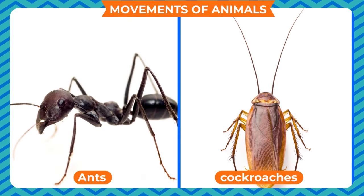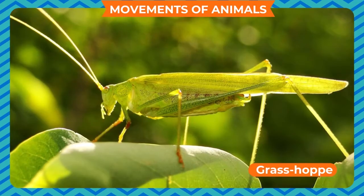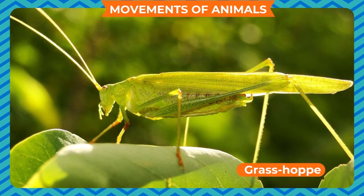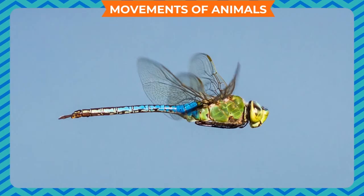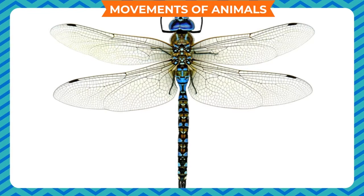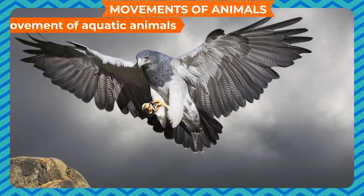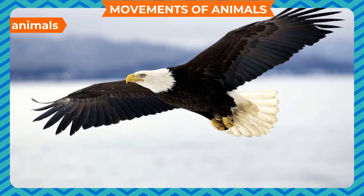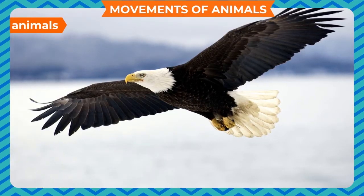Insects have six legs. Ants and cockroaches walk with their legs. Some insects such as the grasshopper hop with the help of their strong hind limbs. Some insects can even fly; their wings are made up of tiny scales and they move their wings with the help of their chest muscles.